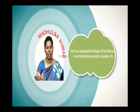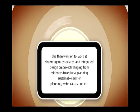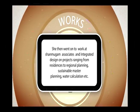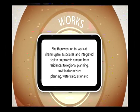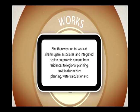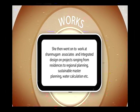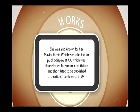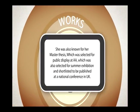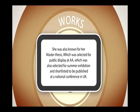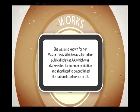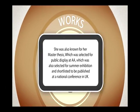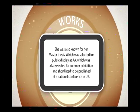Madalika Kumar has completed her Master of Architecture at the Architectural Association, London, UK. She went on to work at Shanmugam Associates and Integrated Design on projects ranging from residences to regional planning, sustainable master planning, water calculation, etc. She is also known for her master thesis, which was selected for public display at AA and shortlisted for publication at a national conference in UK.